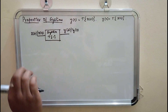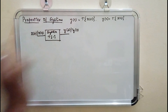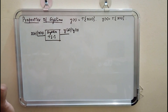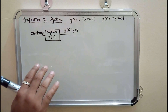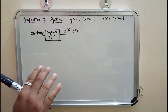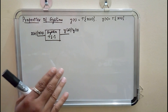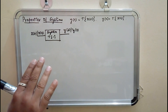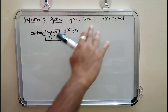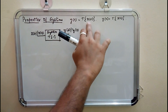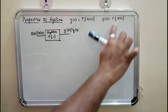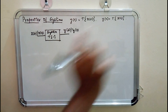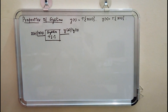Today we will be discussing the properties of the system. We have come to know about the different inputs — X of T in case of continuous time signal and X of N in terms of discrete time signal.